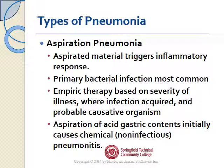Aspiration pneumonia happens because the material aspirated triggers an inflammatory response, and typically patients get a bacterial infection from this. Empiric therapy is based on the severity of the illness, where the infection was acquired, and the probable causative organism. For example, if a patient was down for several hours due to a drug overdose before coming to the hospital and has pneumonia, I might advocate for a stronger antibiotic because of the high risk for a more severe infection.